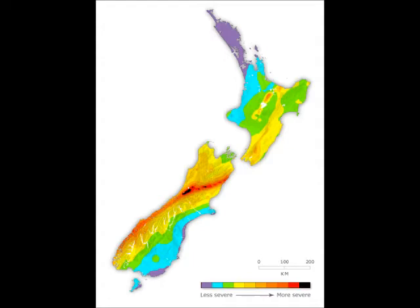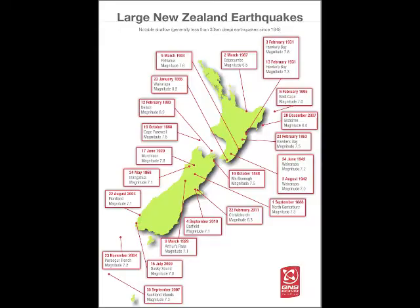Earthquakes occur either due to movement of plates or volcanic activity. Earthquakes that occur along a plate boundary are known as interplate earthquakes, whereas those off a plate boundary are known as intraplate earthquakes.